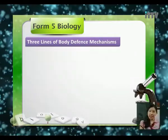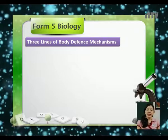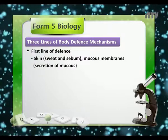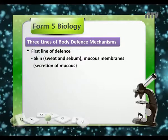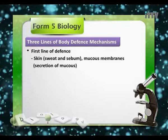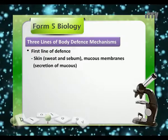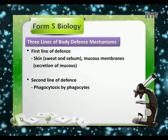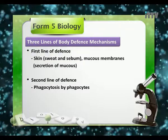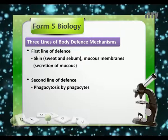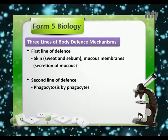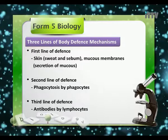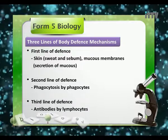Generally, in the human body, there are three lines of body defense mechanisms. The first line of defense will be the skin, through sweat and sebum, and through mucous membranes which secrete mucus. The second line of defense will be a process called phagocytosis by phagocytes. And the third line of defense would be antibodies produced by lymphocytes.